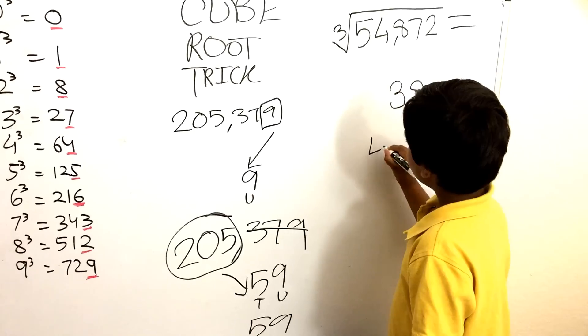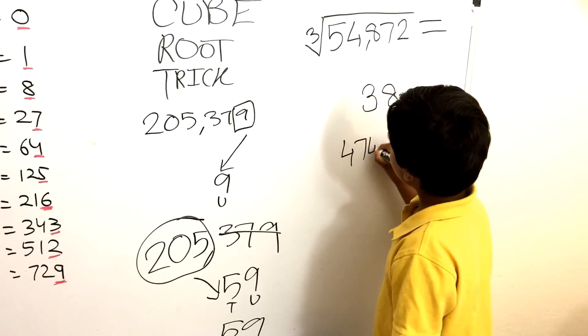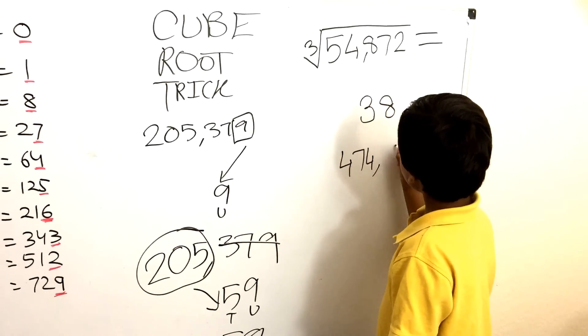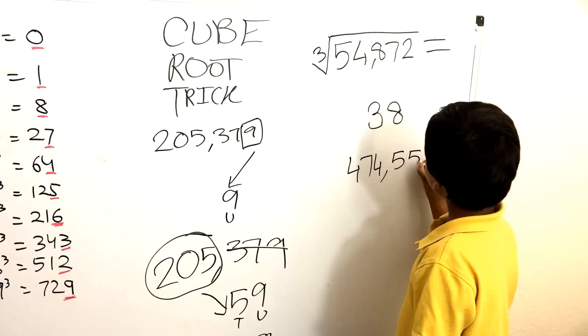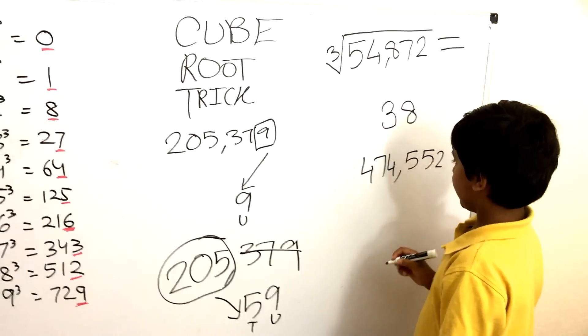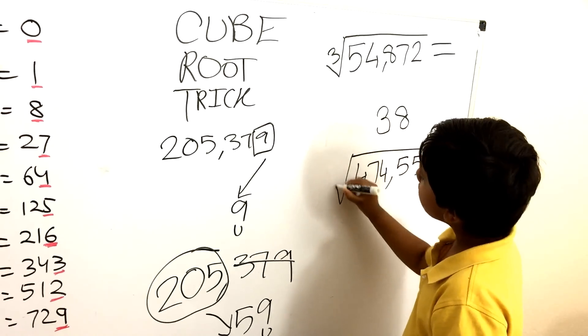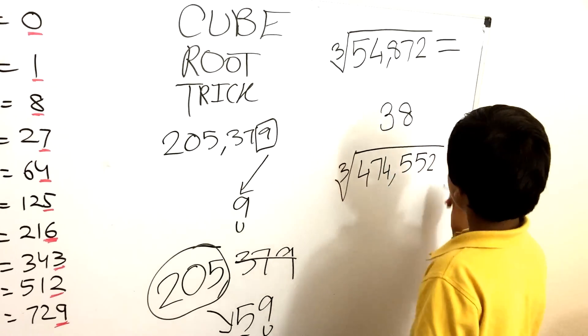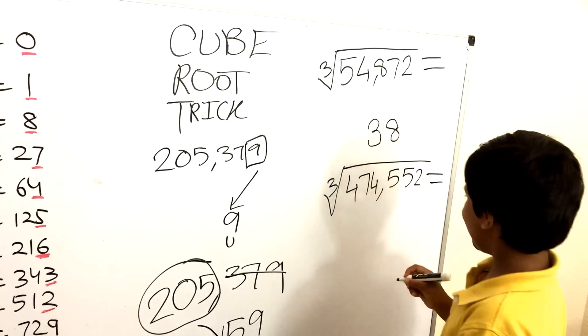Yeah. 4, 7, 4, 5, 5, 2. Okay. There. Equals. Okay.